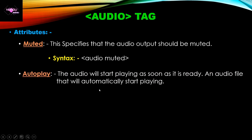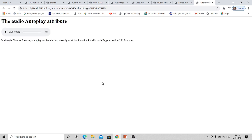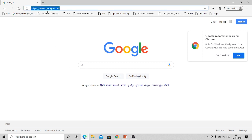The next important one is the autoplay attribute. When you use the autoplay attribute, the audio file will start playing automatically when the web page is loaded in the web browser. The syntax is: audio autoplay. One thing to note: by default in my PC, Google Chrome is the default browser. Google Chrome does not support the autoplay attribute. To verify this, you need to open the content in Microsoft Edge or Internet Explorer.